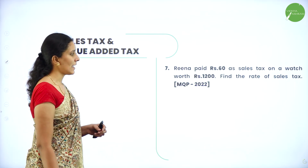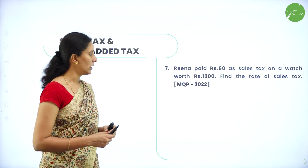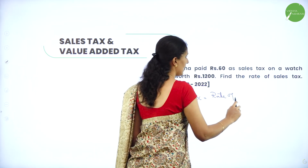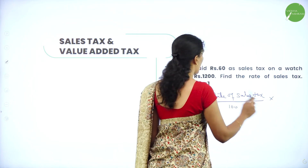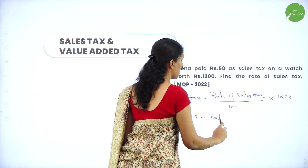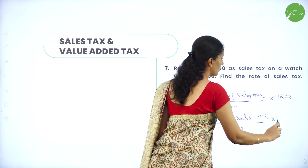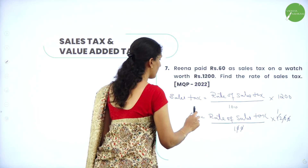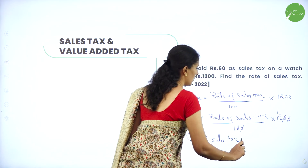Next question: Reena paid rupees 60 as sales tax on a watch worth rupees 1,200. Find the rate of sales tax. Rate of sales tax divided by 100 into 1,200 equals 60. So rate of sales tax equals 60 into 100 divided by 1,200. Cancelling, we get the rate of sales tax equals 5 percent.